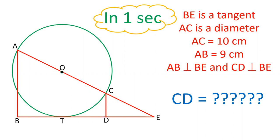Let's see what is the question first. BE is a tangent. AC is the diameter and the length of AC is 10 centimeters. It is given. AB is perpendicular to BE and similarly CD is perpendicular to BE. And the length of AB is given as 9 centimeters.